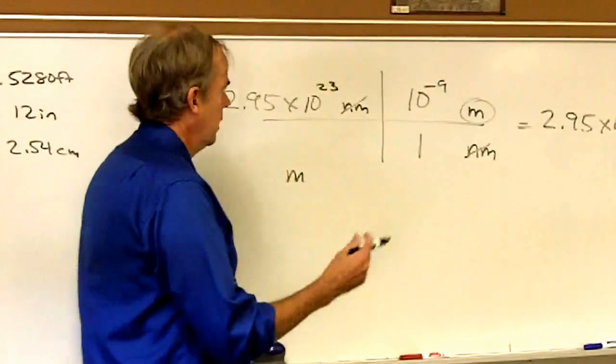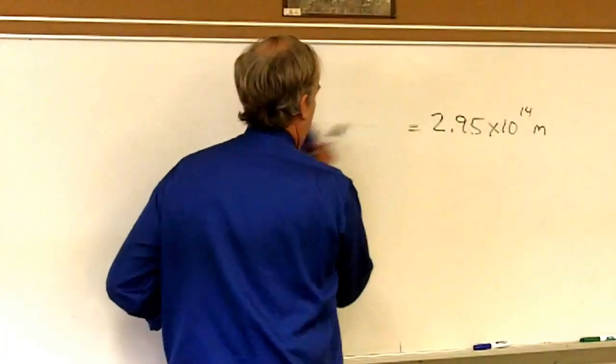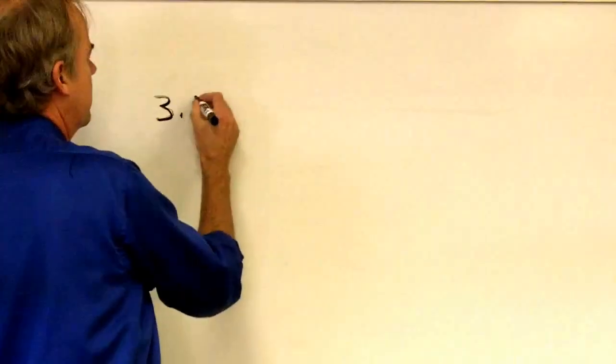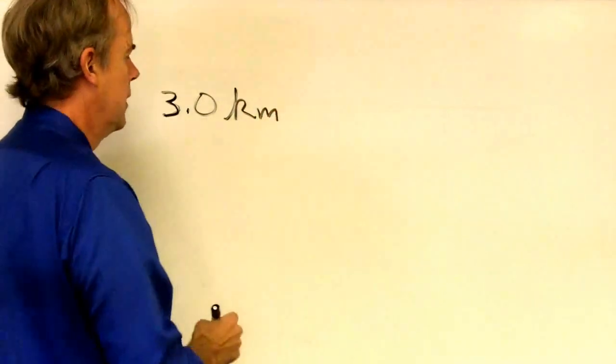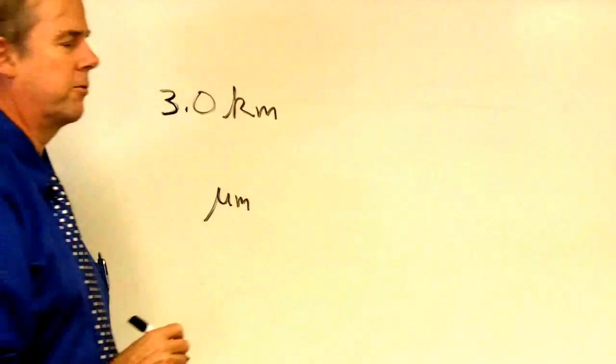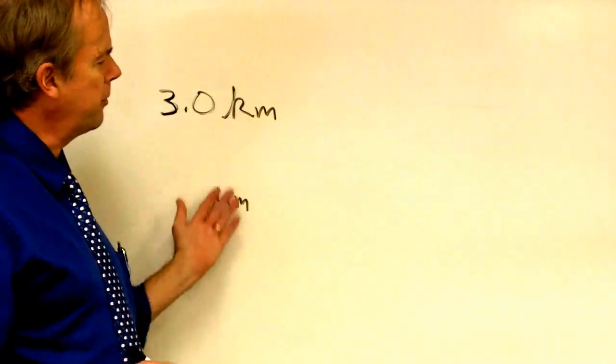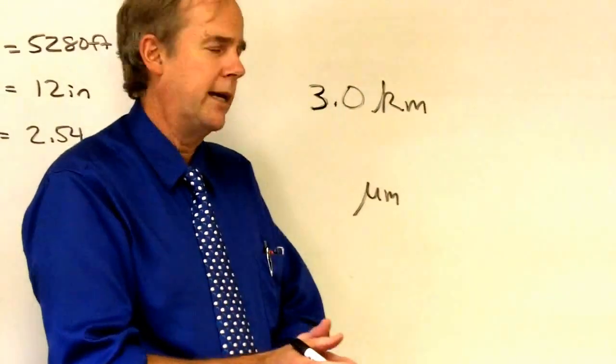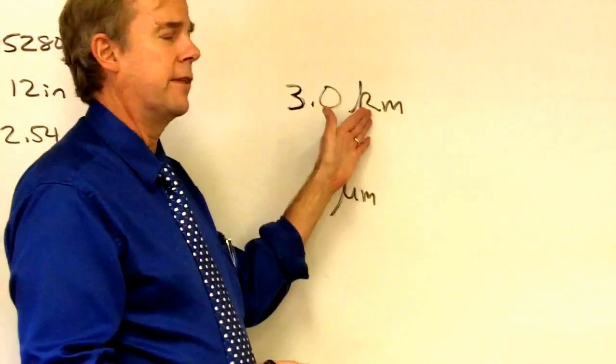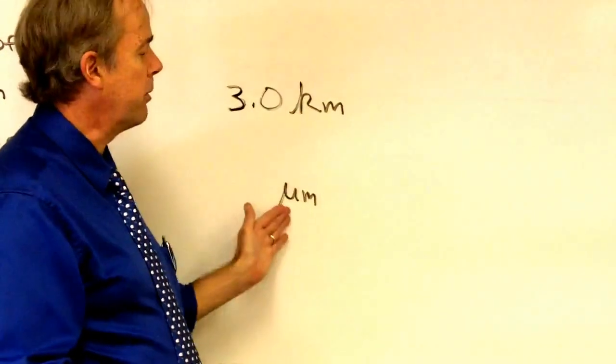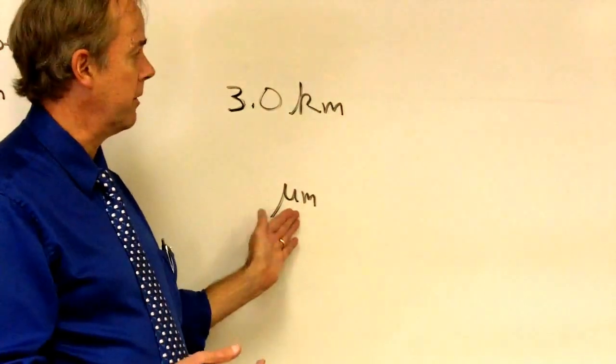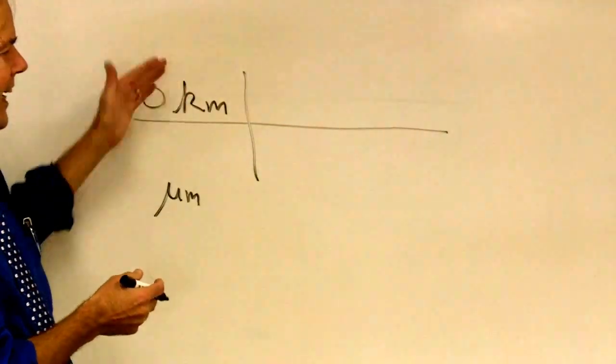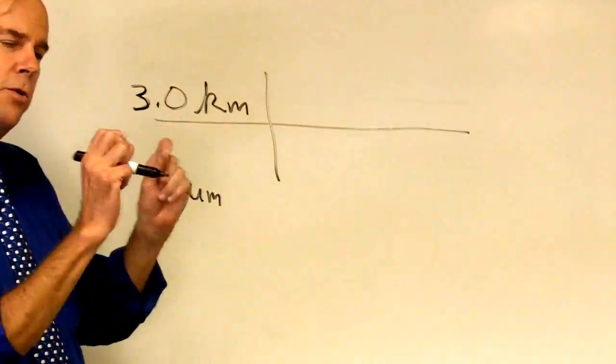For something a little more involved, let's say I wanted to convert 3.0 kilometers to units of micrometers. Now, these are both metric prefixed units. And yes, if you're good with powers of 10, you might know that one of these units, a kilometer, equals 10 to the ninth of these units, micrometers. But if you're shaky on the relationships, I recommend doing intrametric conversions in two steps.